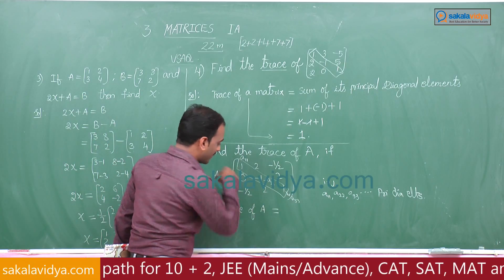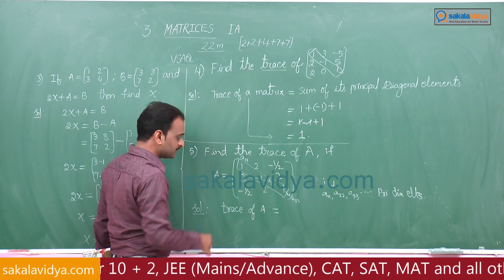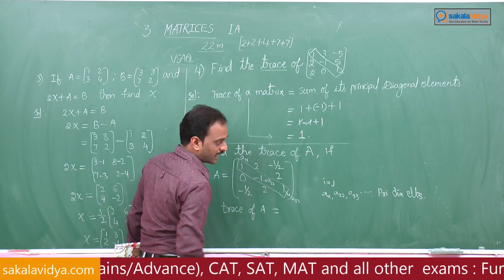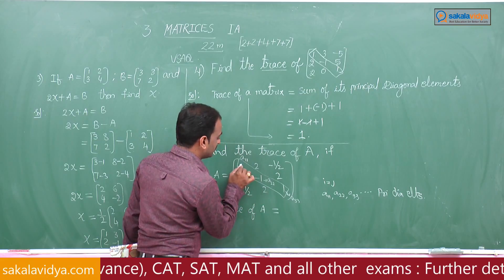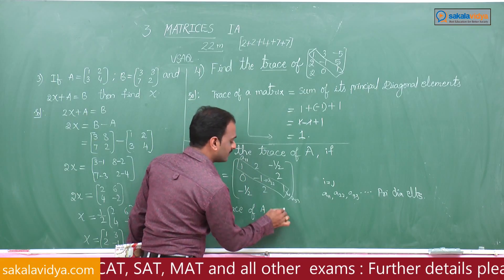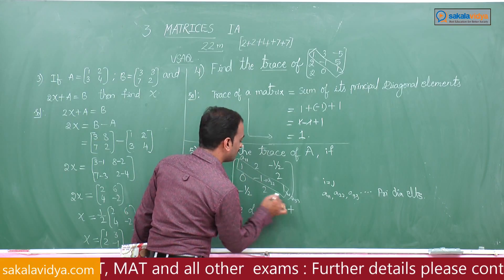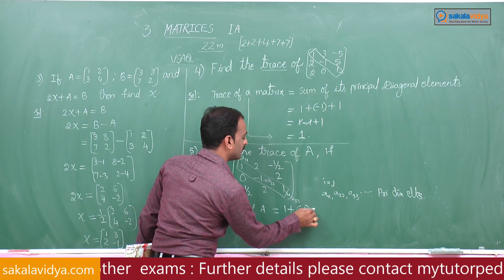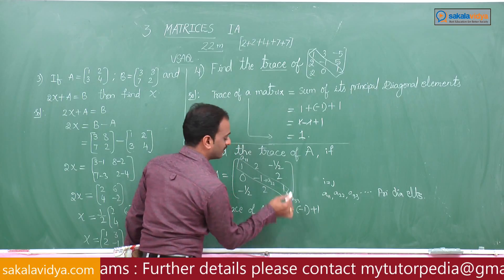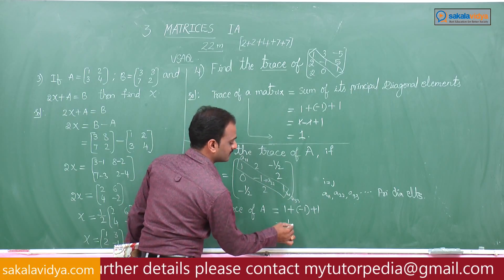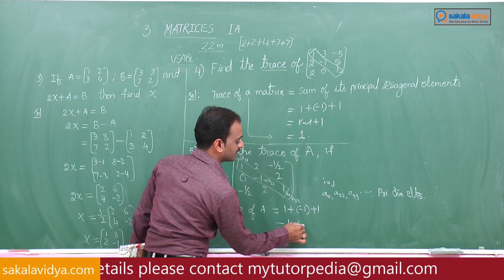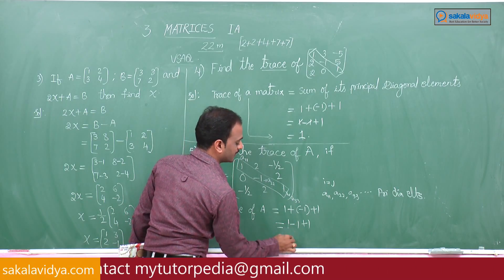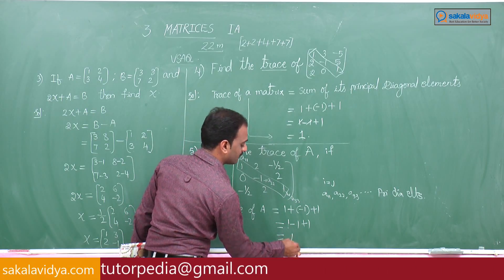So trace of A equals the sum of the principal diagonal elements: 1 plus (-1) plus 1 equals 1.